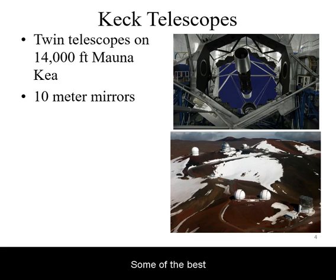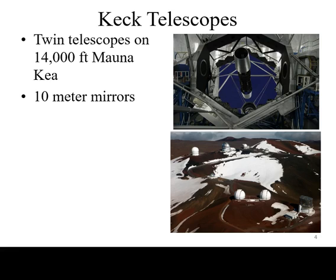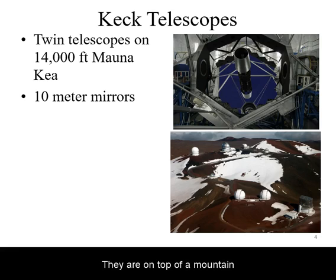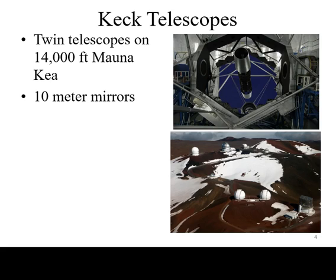Some of the best professional telescopes in the world are located on top of Mauna Kea in Hawaii. The Keck telescopes are an example — they use an aperture size of 10 meters. They are on top of a mountain to reduce atmospheric interference and to be far away from light pollution.